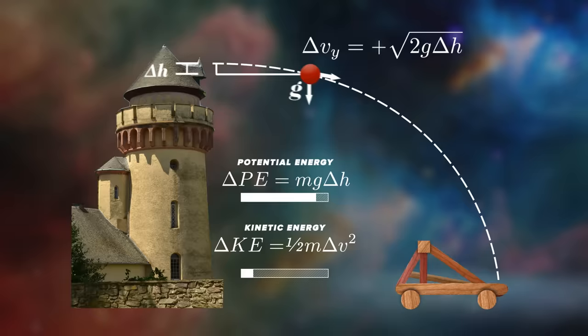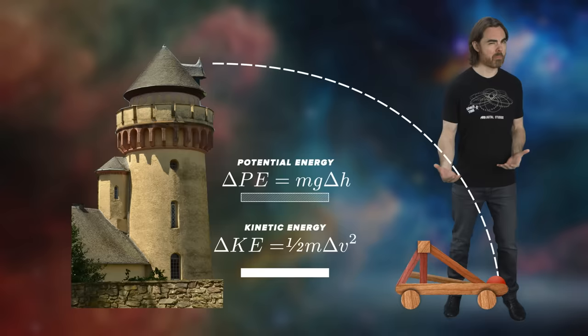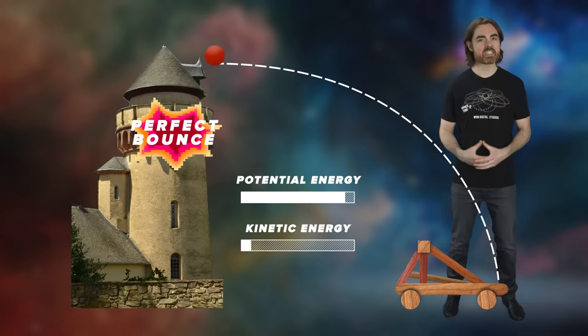And actually, it doesn't even matter if it takes one path out and a different path back. As long as the ball ends up back where it started, it'll always have the same combination of kinetic and potential energy as when it left. And actually, we can be even more general. If an object travels between two different points in a gravitational field, it will always experience the same conversion between potential and kinetic energy, no matter what path it takes.